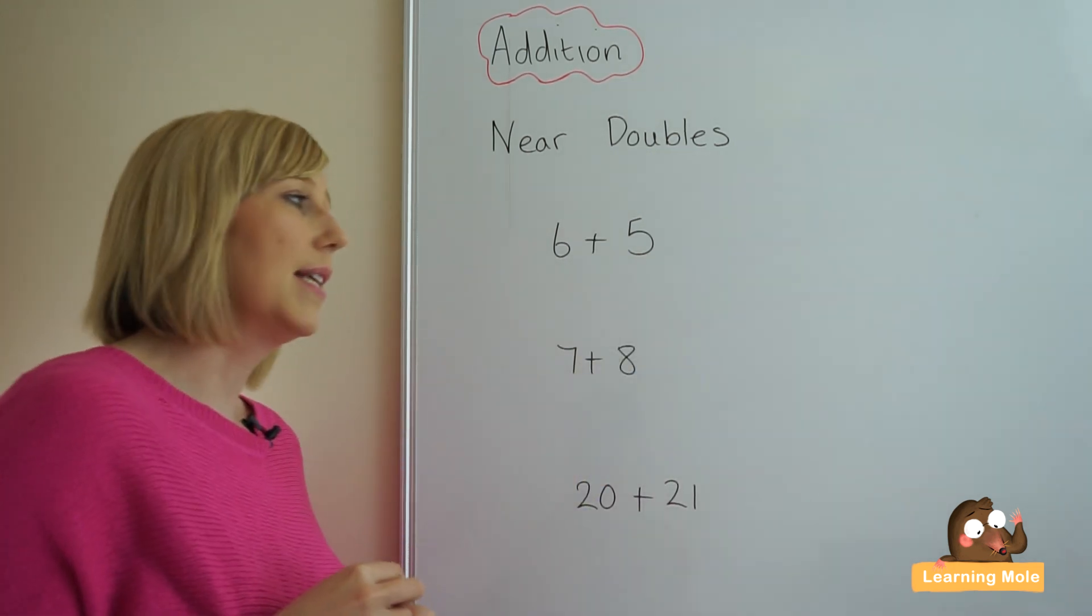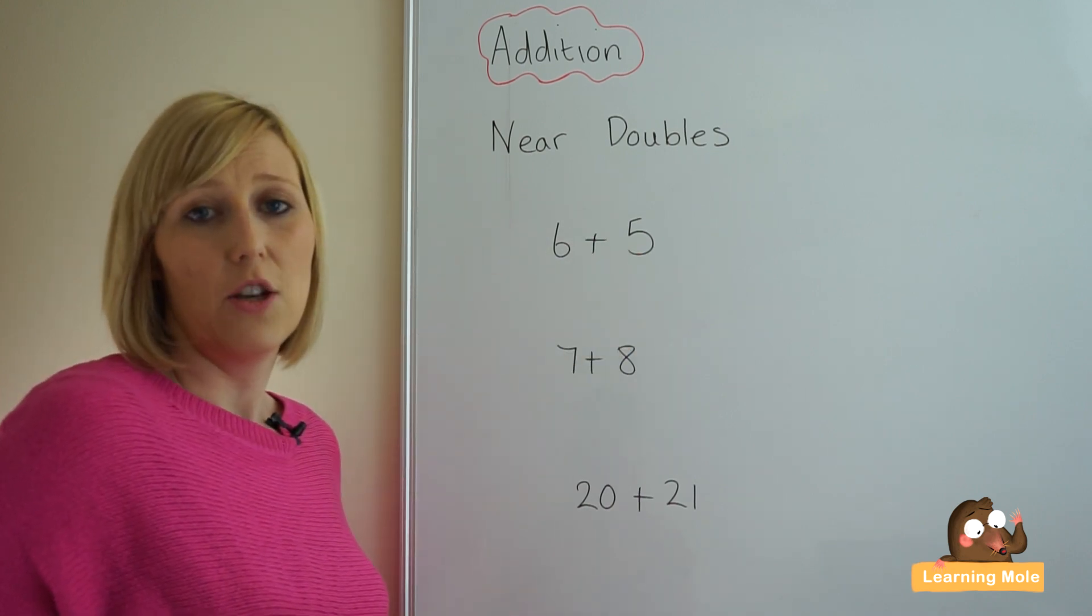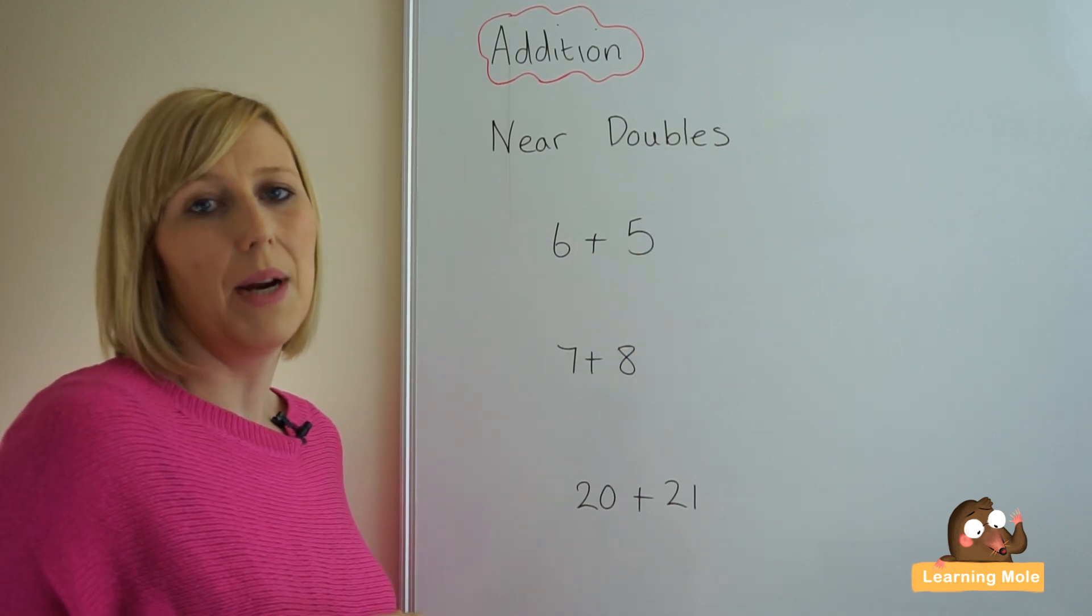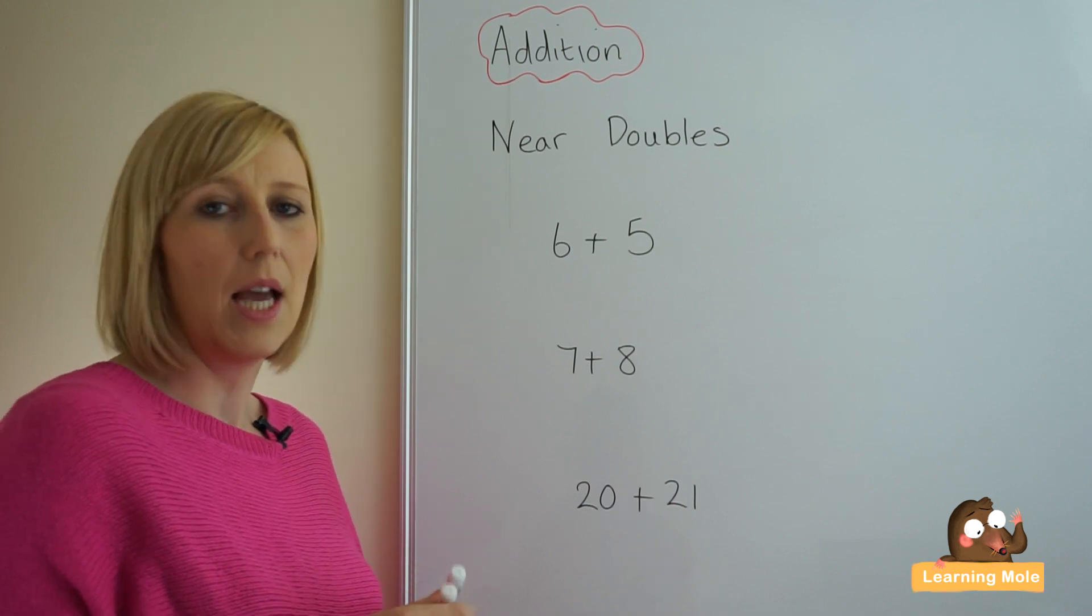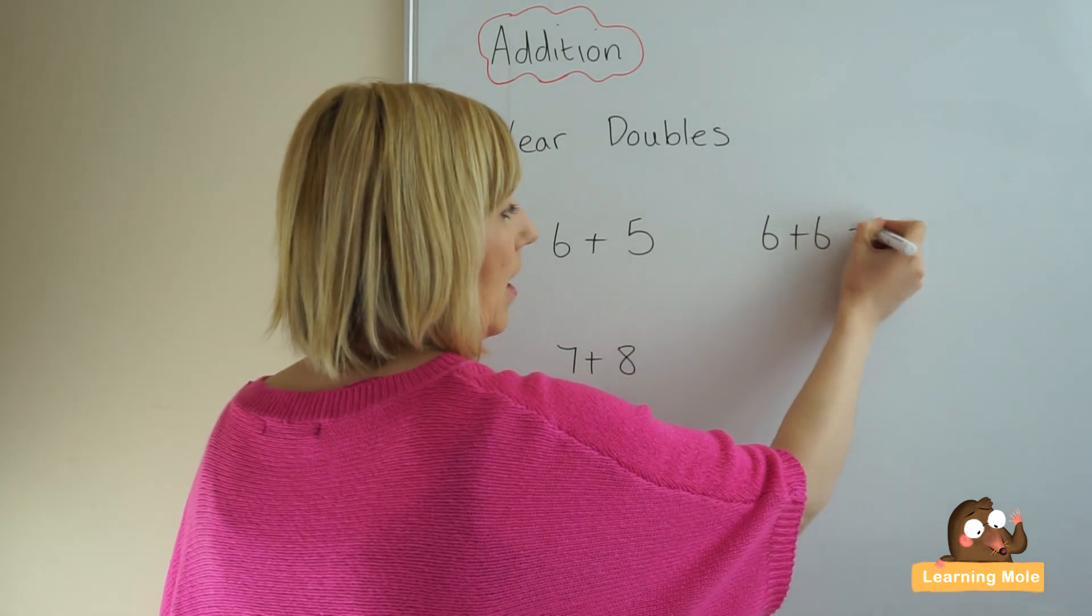As you can see, we have the calculation 6 plus 5 here. Well, 5 is near to 6, so we could double this number and it would be much easier than trying to calculate what 6 plus 5 is, because we already know what 6 plus 6 is, and we know it's 12.